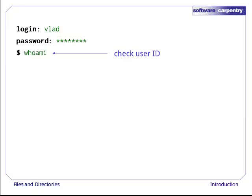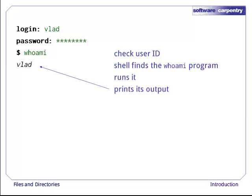Type whoami, followed by enter. This command prints out the ID of the current user, i.e., shows us who the shell thinks we are. When we enter it, the shell finds a program called whoami, runs it, displays its output, and then displays a new prompt, telling us that it's ready for more commands.